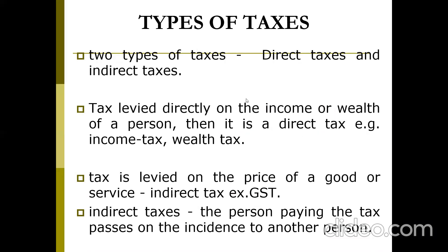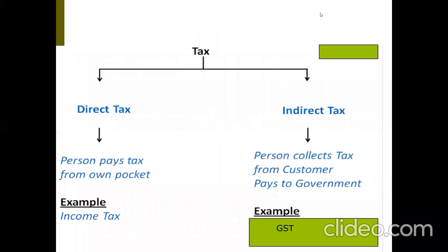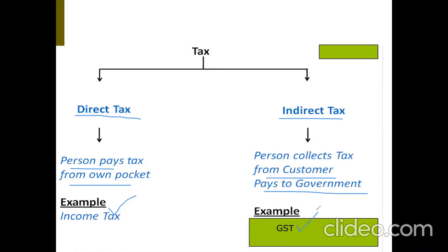For our class purpose, taxes are divided into two kinds. One is direct tax and the other is indirect tax. In direct tax, a person pays tax from his own pocket directly to the government — example is income tax. In indirect tax, a person collects tax from the customer and pays it to the government — example is GST. The shopkeeper collected from me as customer and paid to the government.